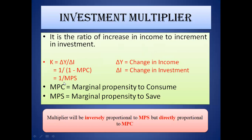The investment multiplier is the ratio of increase in income to increment in investment. If you are increasing your investment, how much increase occurs in your income is called the investment multiplier. For example, if you were investing two thousand rupees and later started investing four or five thousand, the ratio of income increase due to that investment is the investment multiplier.